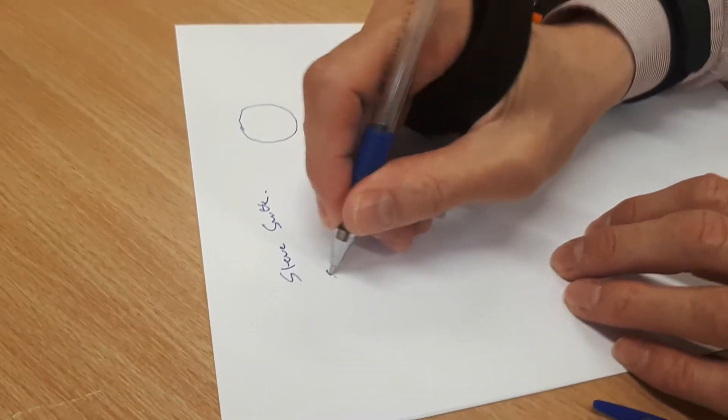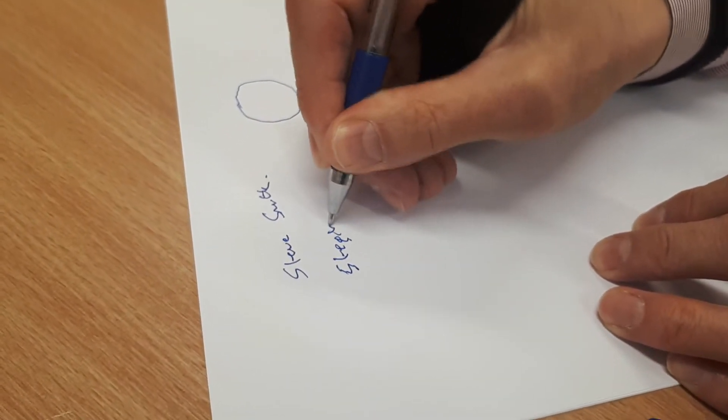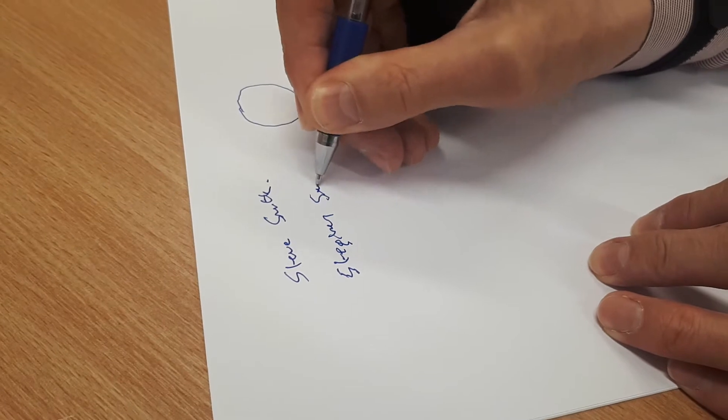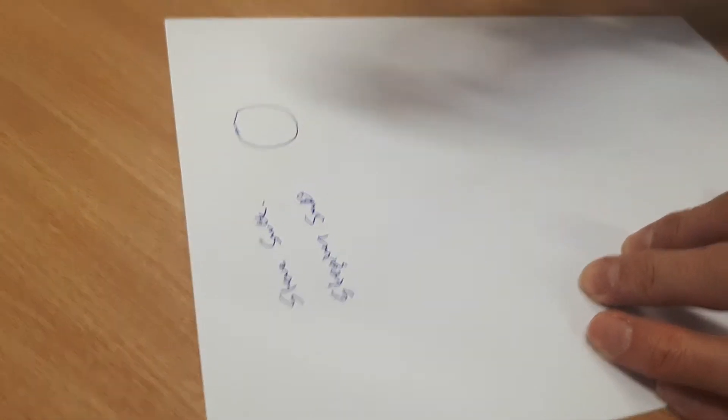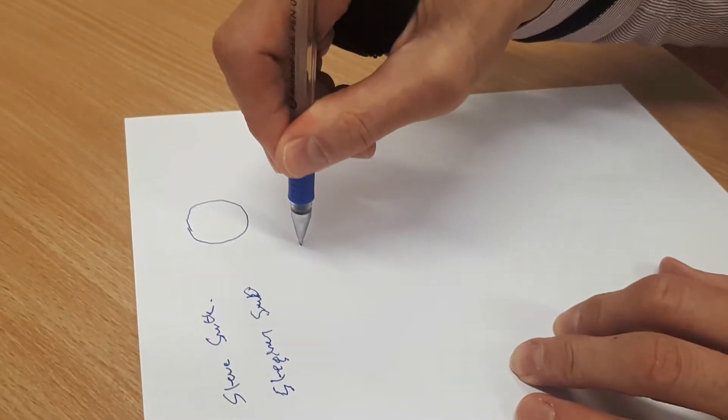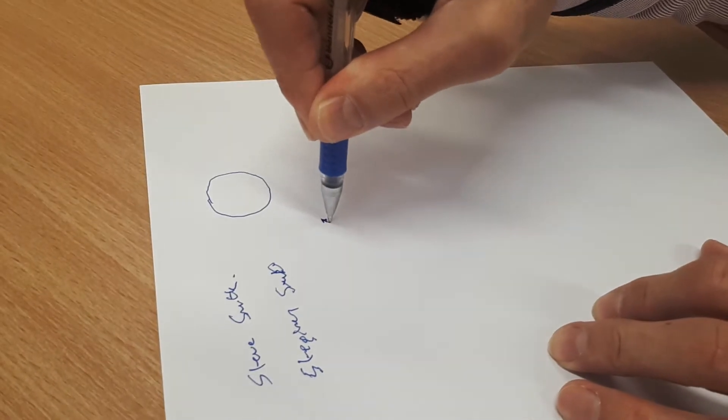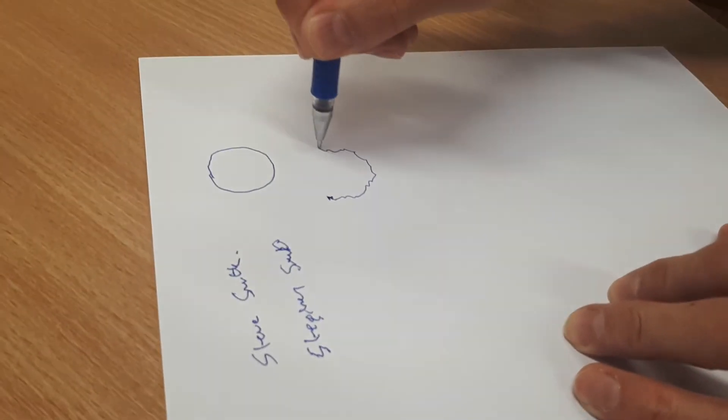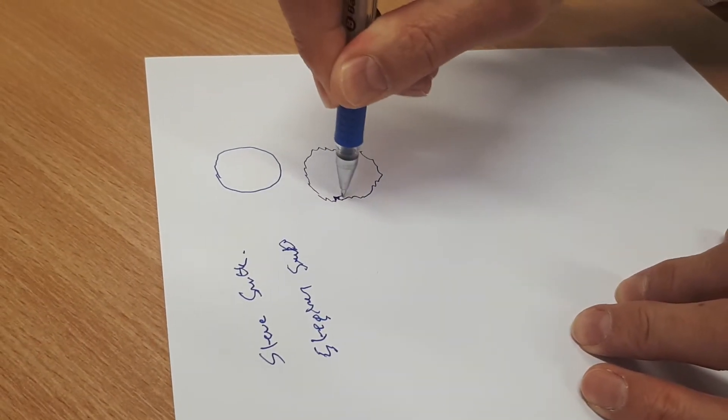When I try to write my name again, it has quite a significant effect on my writing ability. Even keeping the pen still on the paper is difficult, and when I try to draw the circle it has quite an effect as well.